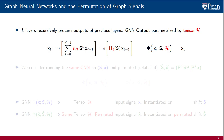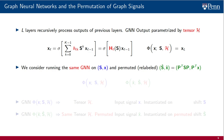We use phi to denote the GNN operator. We consider the result of running the GNN defined by the filter tensor h on the signal x supported on s, and on the permuted signal x-hat supported on the consistently permuted shift s-hat. That is, the permuted signal is p-transpose x, and the permuted shift is p-transpose sp.